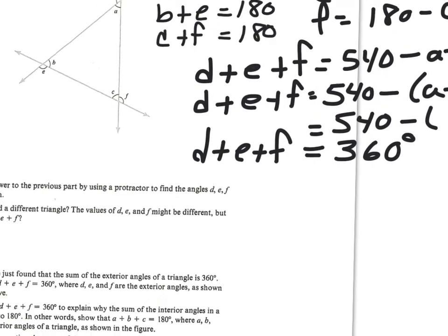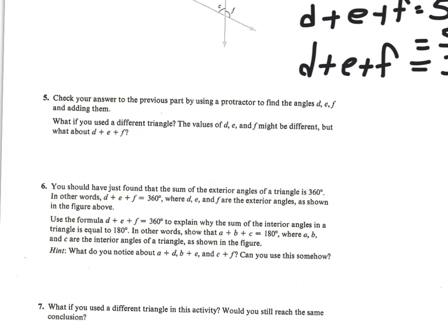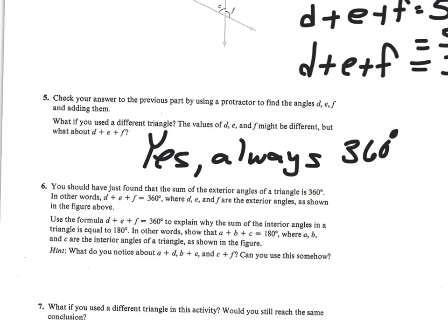Number five asks whether that's always the case — and yes, it's always 360 degrees, because with any triangle we can use that exact same method: create three equations, solve for one variable each, and add them together. Now the next question asks whether we can use that same idea in reverse to show why the sum of the interior angles must equal 180 degrees. Let's do what we just did, but backwards.